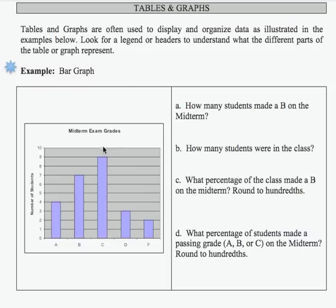In this example, we have a bar graph that displays midterm exam grades for the number of students in a given class. So I'm going to start by looking at each of the pieces of the bar graph and then identifying the numbers that go with them.